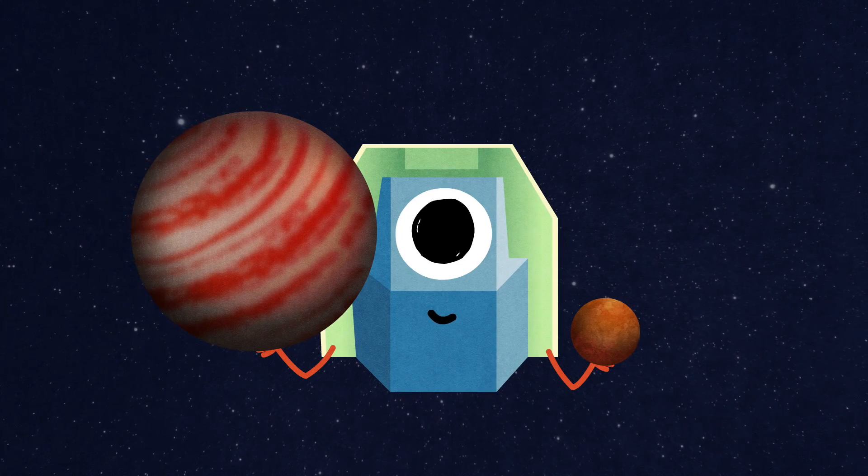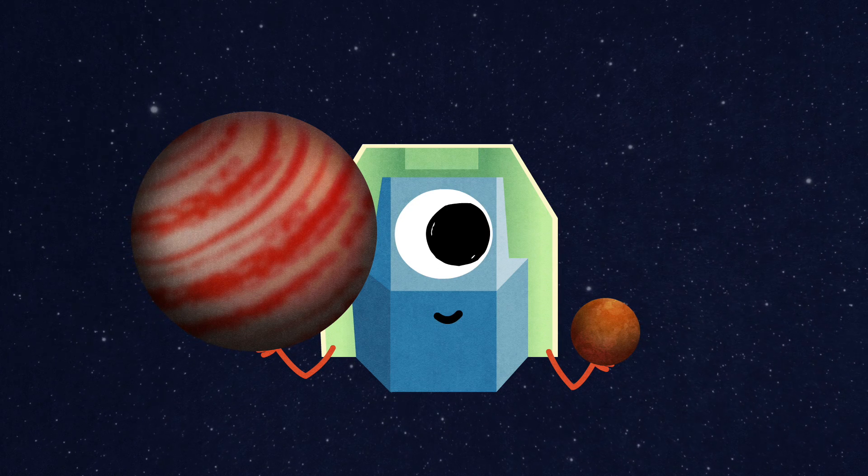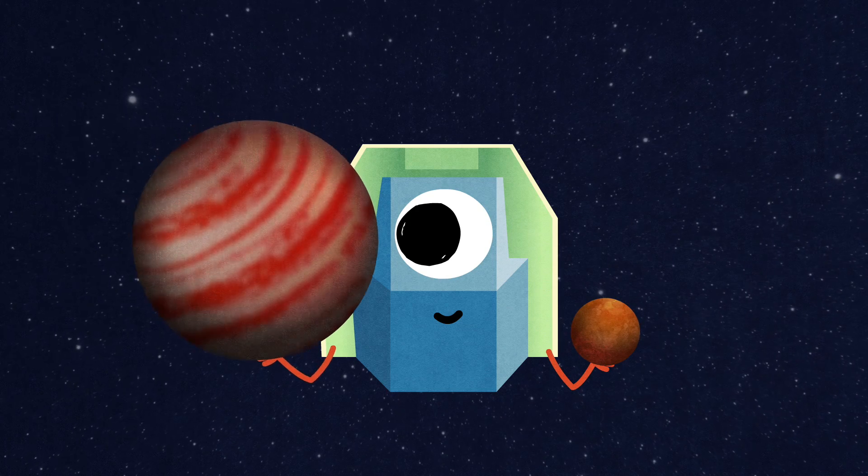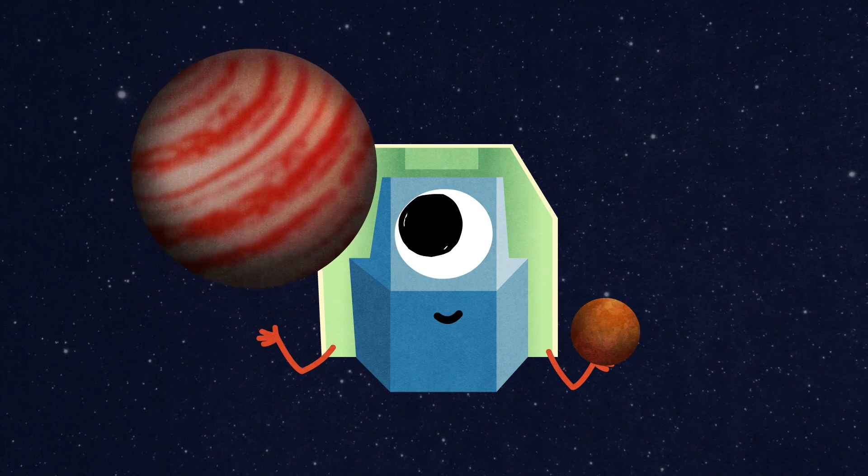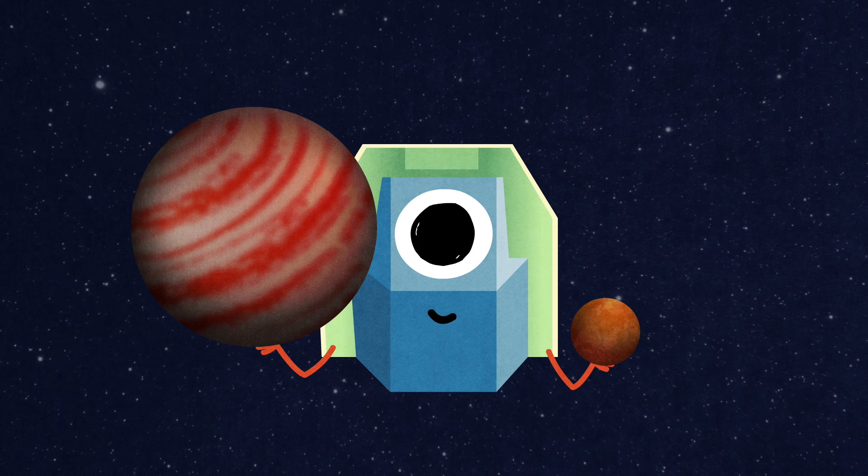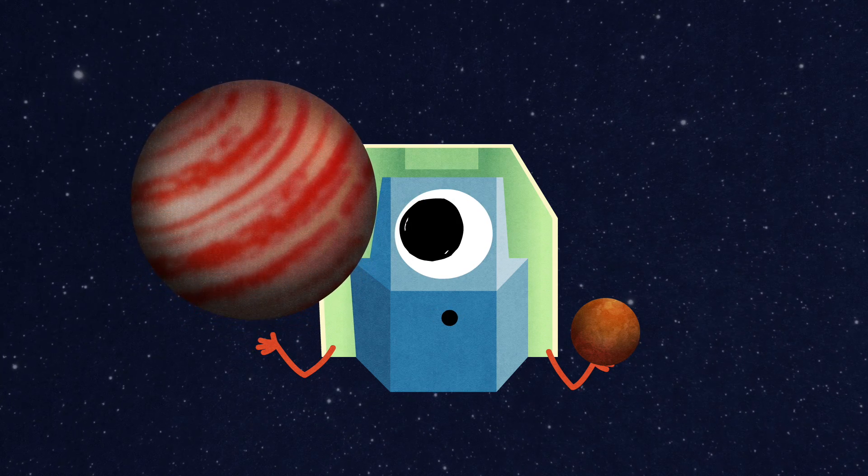CHEOPS is unique because it focuses specifically on planets with known masses to precisely measure their size. Together, the size and mass of a world make it possible to know its density. That way, even without being able to see exoplanets directly, we already have vital clues on their compositions.